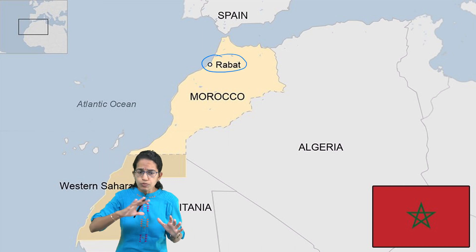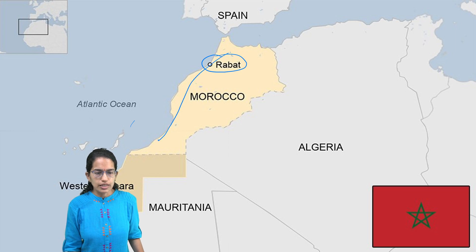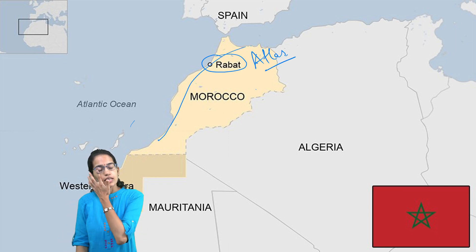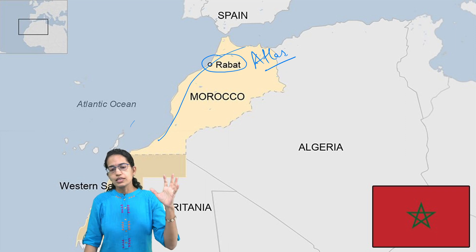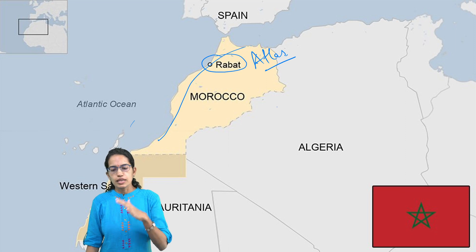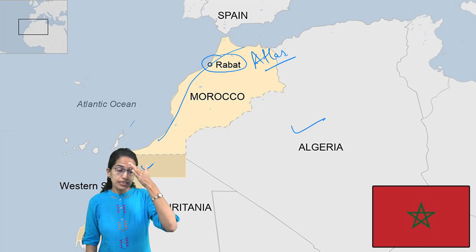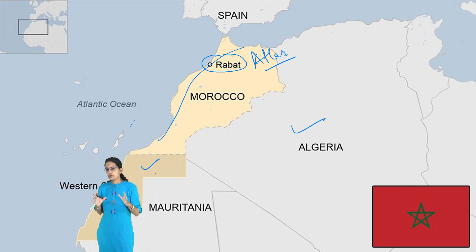Morocco is approximately the size and shape similar to California. The capital is Rabat. The most important feature is the Atlas mountain range that runs through Morocco in the regions of north-west Africa. The neighboring nations include Algeria and Western Sahara.